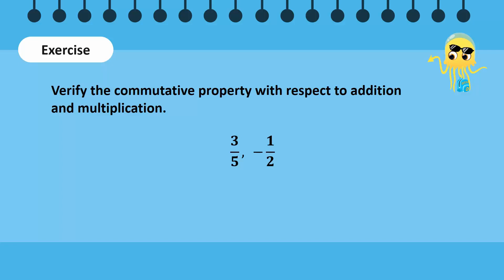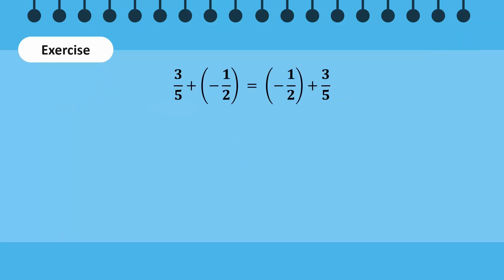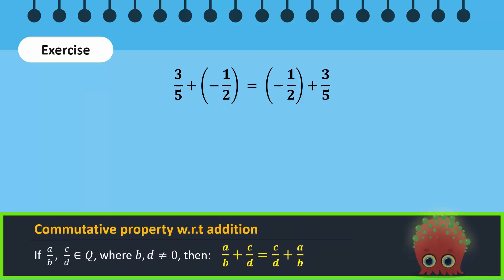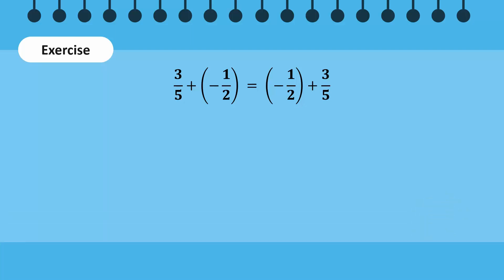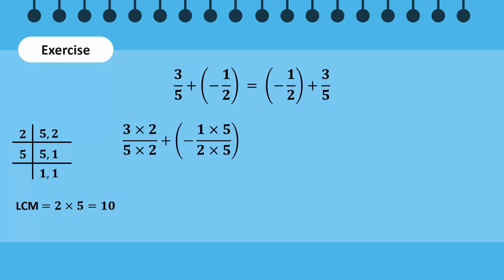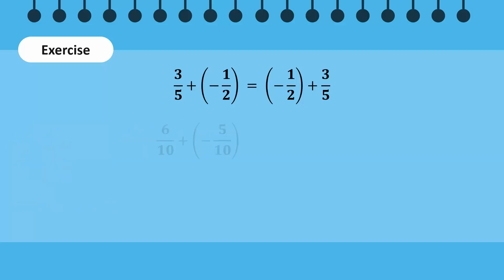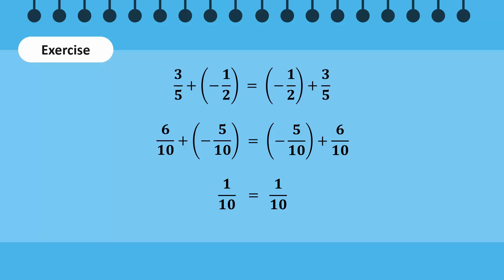Let us solve the problem together. First, we will verify the commutative property with respect to addition. We will solve the left-hand side of the equation. Since the denominators are not equal, an LCM of 5 and 2 is taken. Next, the numerators of these two numbers are added, which results in 1 over 10 as the answer. We then perform the steps on the right-hand side of the equation and again get 1 over 10 as the answer. Since the left-hand side equals the right-hand side, the commutative property with respect to addition of rational numbers is verified.